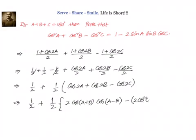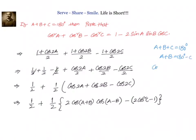Let us go to the next step. We have cos A plus B here. Now we need to get cos C. For that, we will go back to A plus B plus C equal to 180 and find out what is cos of A plus B. So A plus B equal to 180 minus C. Therefore cos of A plus B equal to cos of 180 minus C. But we know that cos of 180 minus theta is minus cos theta. So cos A plus B is equal to minus cos C.